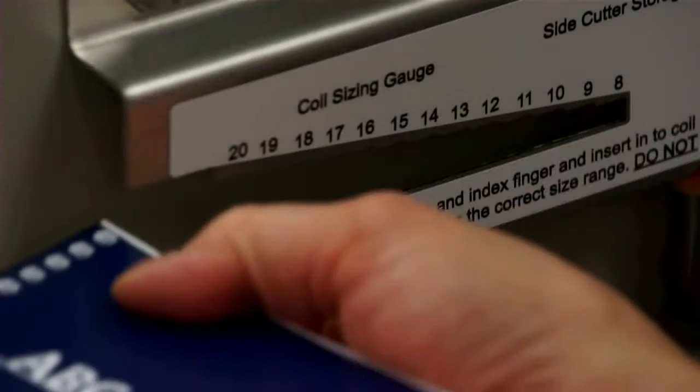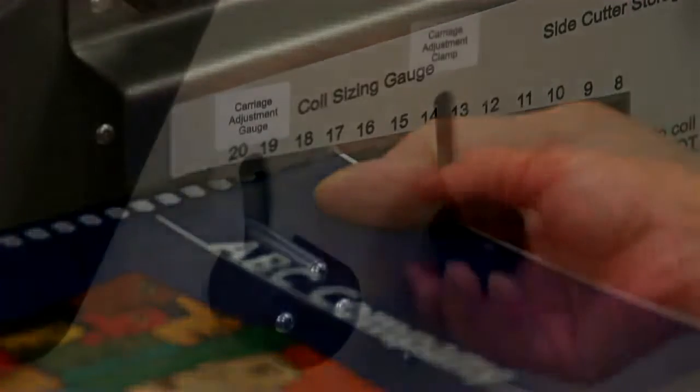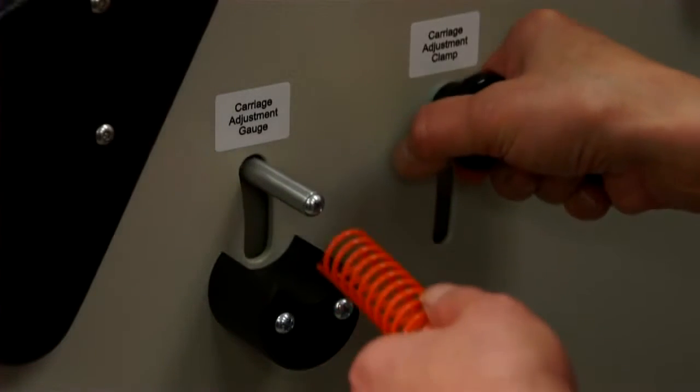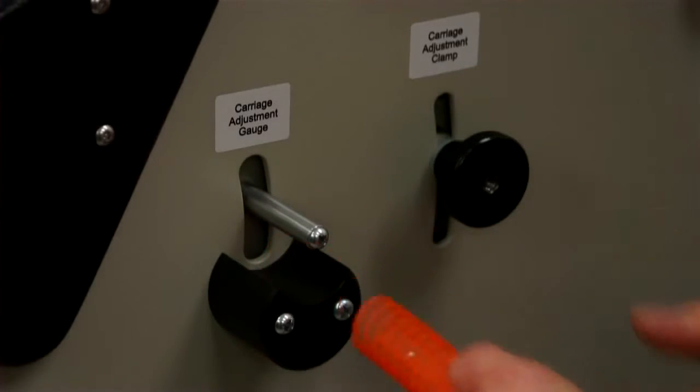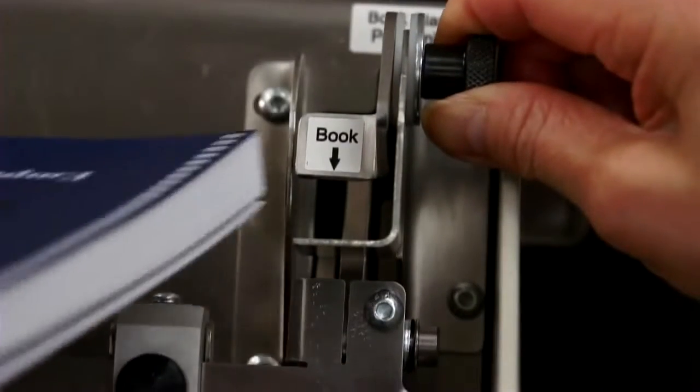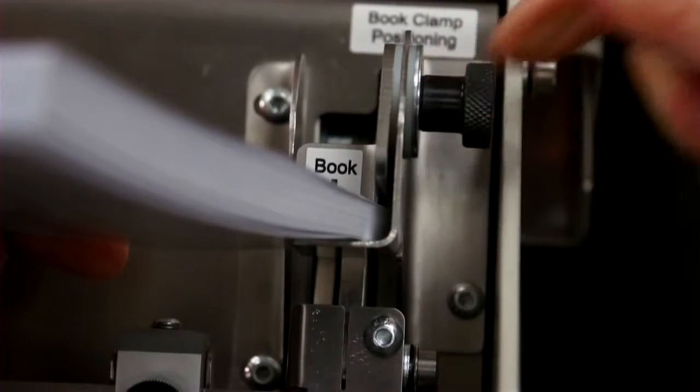The Coilmatic has a built-in coil sizing gauge to help the operator confirm the diameter of coil required in relation to the book's thickness. The Coilmatic's innovative carriage adjustment gauge lets the operator change from size to size with ease. The Coilmatic book clamp adjustment gauge uses the book that's being bound to set the proper book clamp positioning.